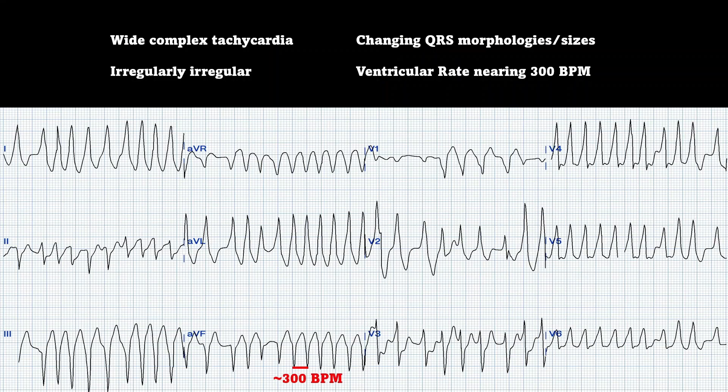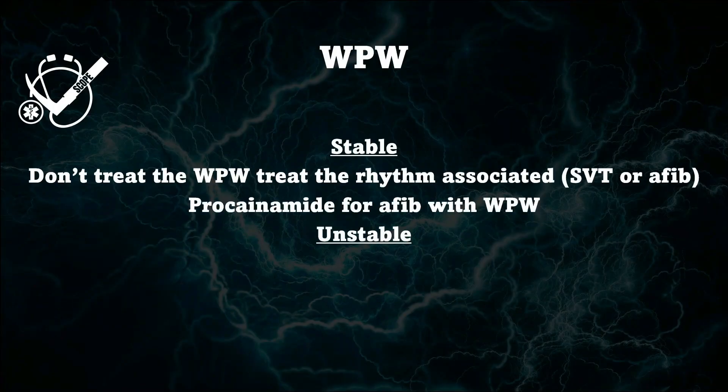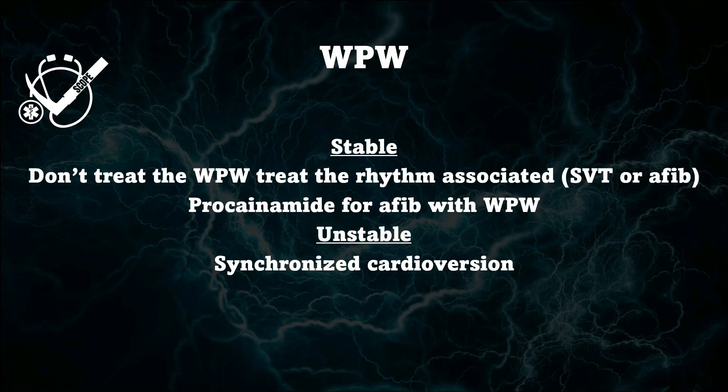So what do you do with these kinds of patients? We can treat them — you can have a stable and unstable presentation. Unstable, as we know, is Edison before medicine: synchronized cardioversion. Simple as that. Stable is you don't really treat it just because it's Wolf-Parkinson-White. You treat the rhythm associated with it, such as antidromic or orthodromic AVRT — atrioventricular reentry tachycardia — which is very common with Wolf-Parkinson-White patients, and we'll discuss that a little bit later.